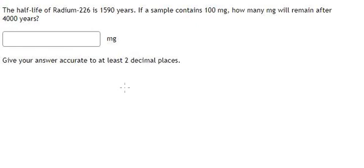I will show you how to answer. We have the original amount - I will put P0 - multiply by 2 to the power of negative small t over capital T. Capital T is the